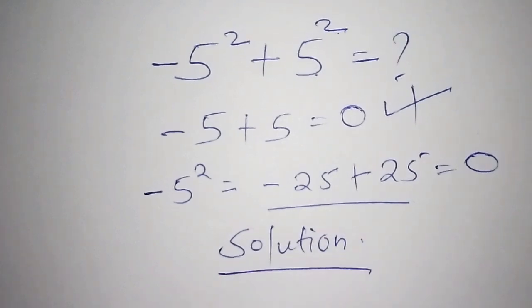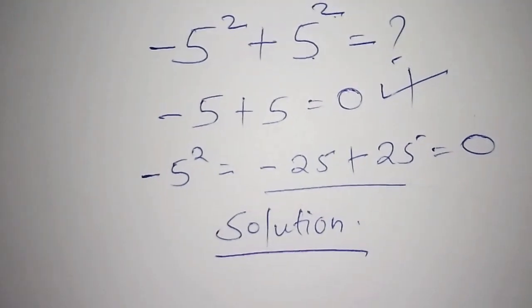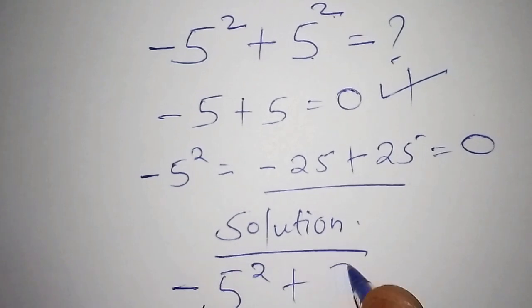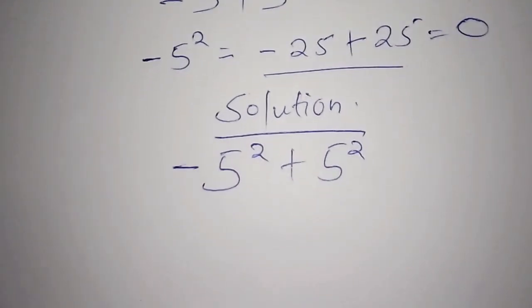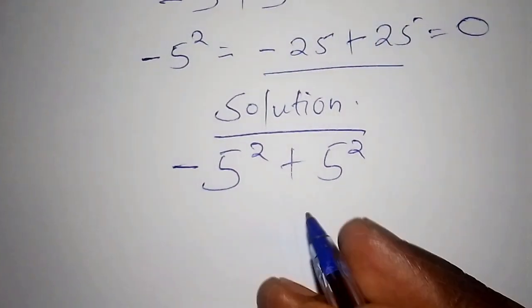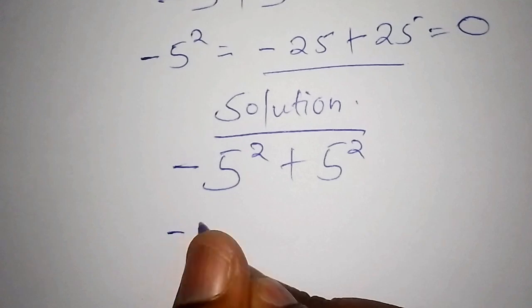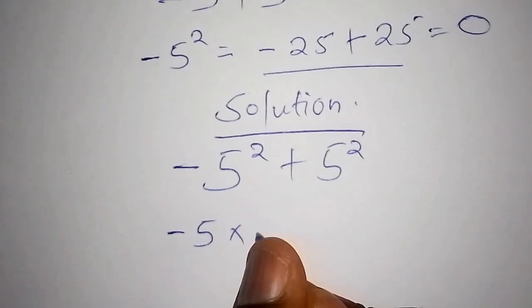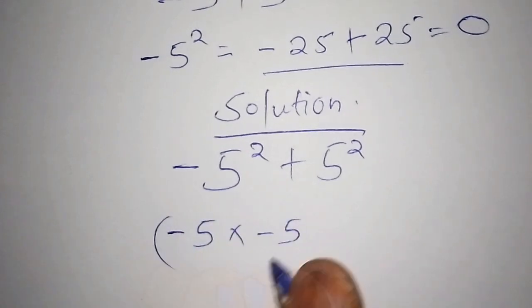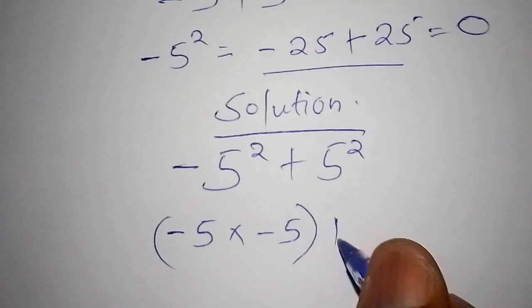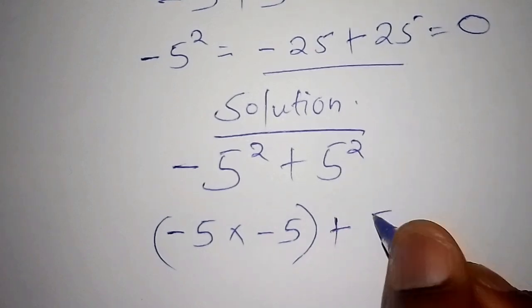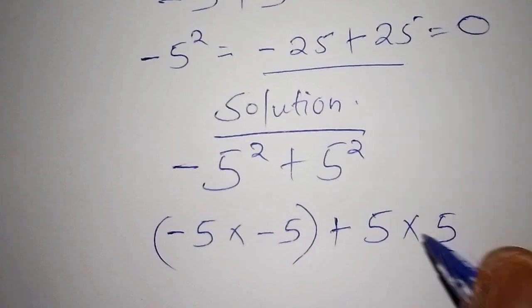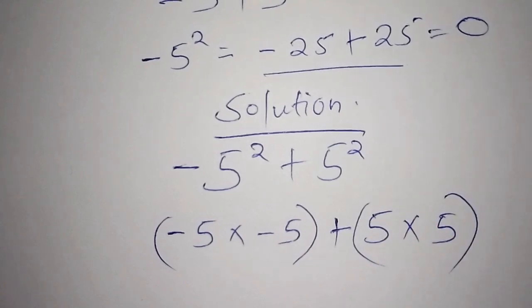We want to work out minus 5 squared plus 5 squared. So the first step: minus 5 squared is the same as minus 5 multiply by minus 5 in brackets, then we add 5 to power 2, which shall be 5 multiply by 5, also in brackets.